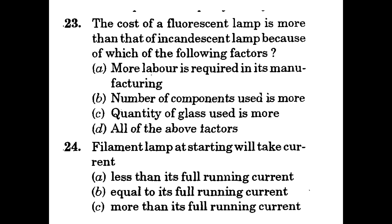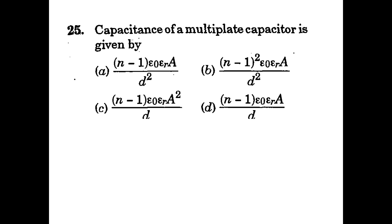The cost of a fluorescent lamp is more than that of an incandescent lamp because of — more labor required, more components used, or more quantity of glass used? Answer: all of the above factors, option D. At the filament lamp starting, it will take — less than, equal to, or more than its full running current? Answer: option C, more than its full running current. Question 20: Capacitance of a multiplated capacitor is given by (N-1)ε₀εᵣa/d. Answer: option D, (N-1)ε₀εᵣa/d.